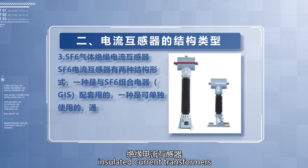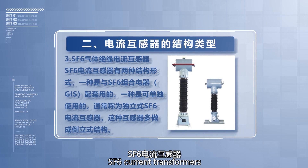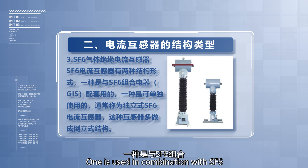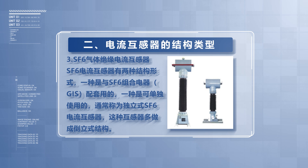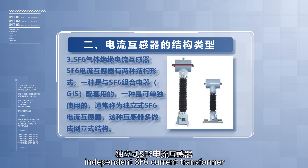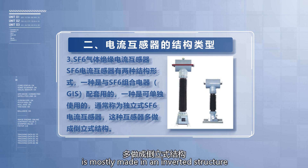SF6 gas insulated current transformers have two structural forms. One is used in combination with SF6 electrical equipment, and the other is the standalone type, commonly referred to as an independent SF6 current transformer. This type of transformer is mostly made in an inverted structure.